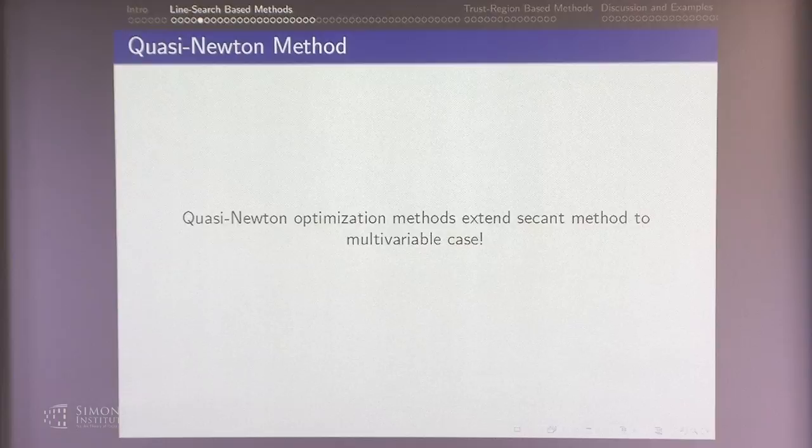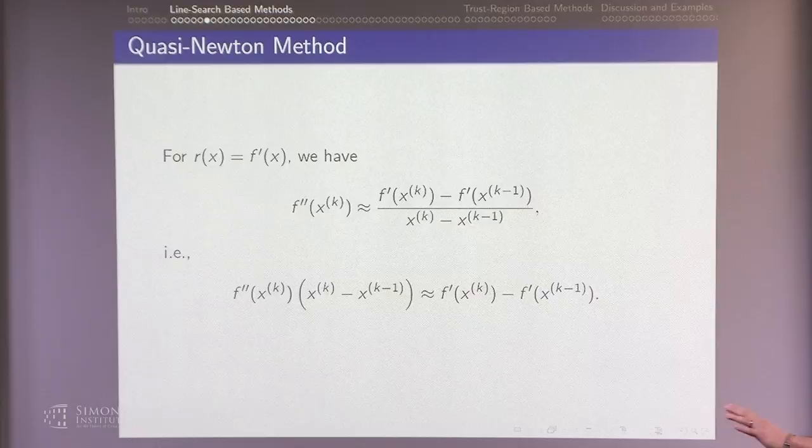For optimization, the nonlinear function we want to find the root of is the gradient. Instead of talking about r, I'm talking about f', the derivative of the function I want to minimize, and instead of r', I talk about f'', the Hessian, approximated with the secant.